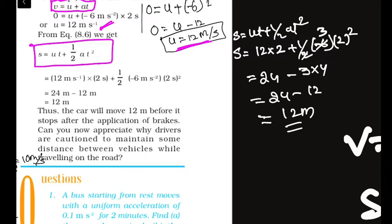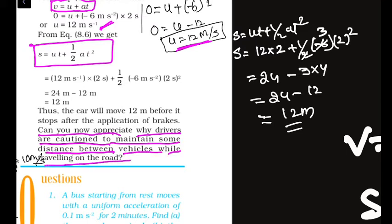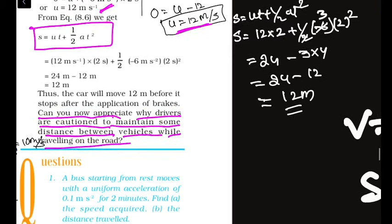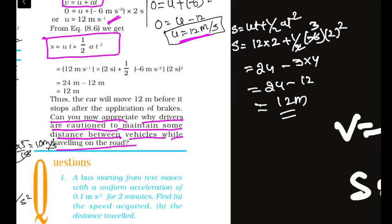The total distance after applying brakes is 12 meters. This is why drivers are advised to maintain safe distances between vehicles while traveling on the road — after applying brakes, the car still moves 12 meters.